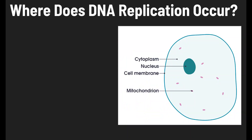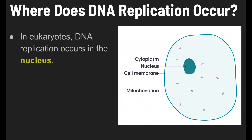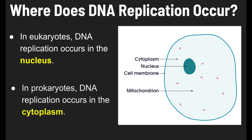Where does DNA replication occur? In eukaryotes, DNA replication occurs in the nucleus. Eukaryotes have a nucleus, and the DNA is inside of it. But prokaryotes do not have a nucleus, so for prokaryotes, DNA replication occurs in the cytoplasm.